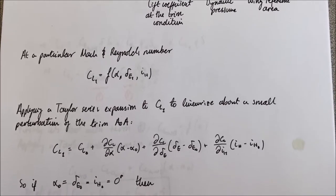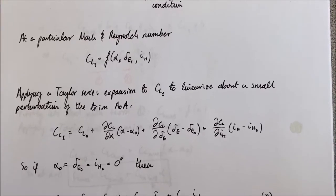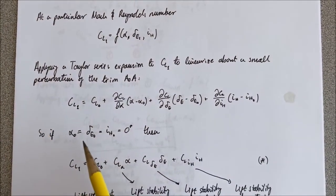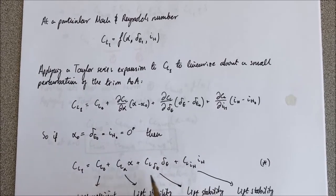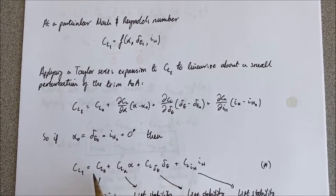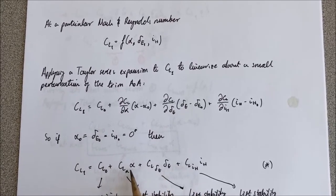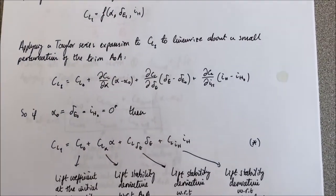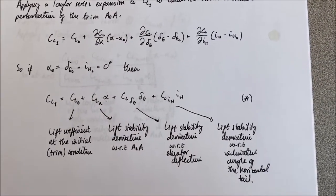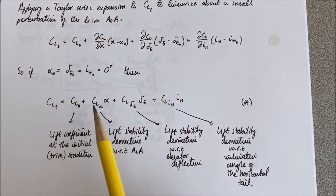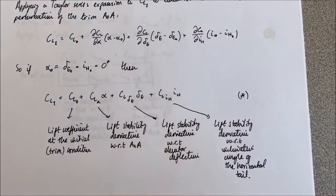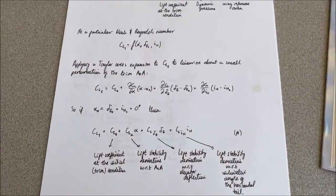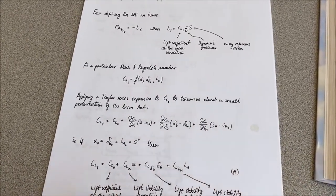We apply a Taylor series expansion to CL1 and also apply our reference condition to write the lift coefficient associated with the trim condition as an expression. The subscripts here mean derivative with respect to. So these are all lift stability derivatives: the lift stability derivative with respect to angle of attack, with respect to elevator deflection angle, and with respect to inclination angle of the horizontal tail. So far, that formulation is the same as how we formulated the drag coefficient.